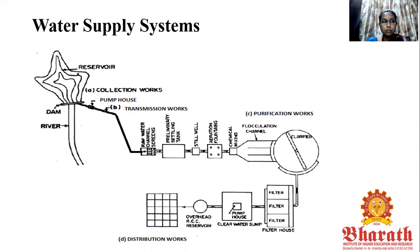Then we have the layout of the water supply system. In the layout, we can see the various units of works, as given clearly in this diagram. The first unit of work — the collection work — is where water is collected from the reservoir. Then there is a pump house to pump the collected water to the next unit of work, that is the treatment process. The water is conveyed or transmitted to the treatment plant through pipes, canals or channels, which comes under the transmission works.